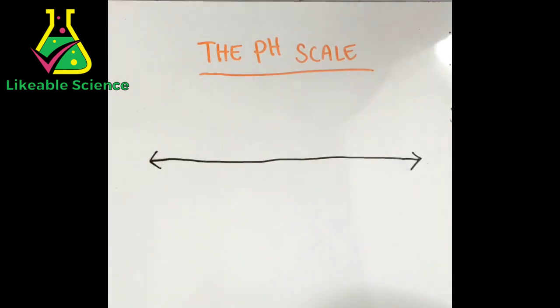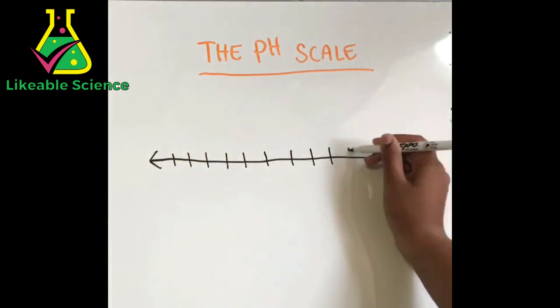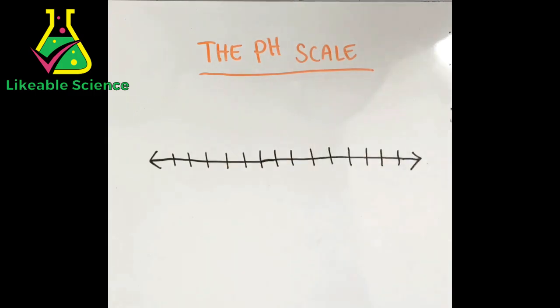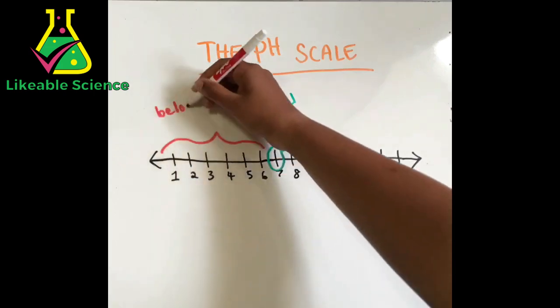It's numbered from 0 or 1 to 14, and the midway point, number 7, means that the substance is neutral. Anything below 7 means the substance is an acid, and anything above 7 means the substance is a base.